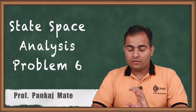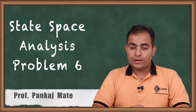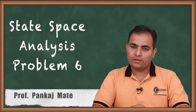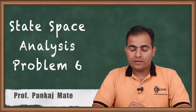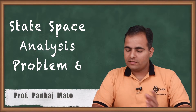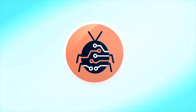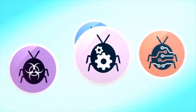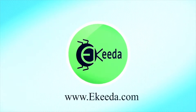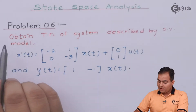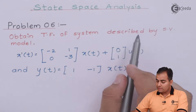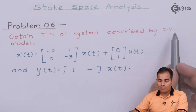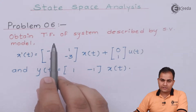First of all we will see what is the question, because we are going to obtain transfer function using state variable using one formula, which we have already derived in the theory part. Problem number 6: obtain the transfer function of a system described by SV model. SV stands for state variable model and TF stands for transfer function.